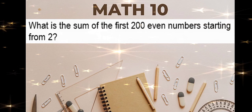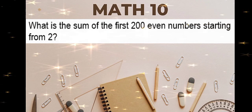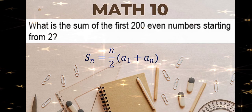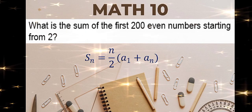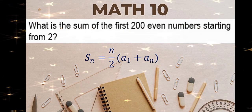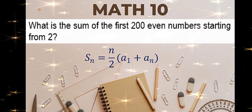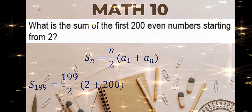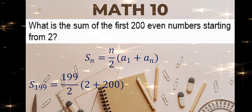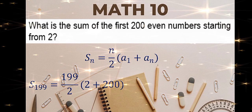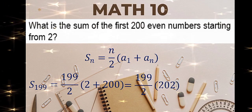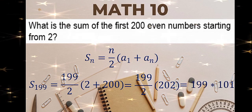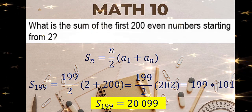What is the sum of the first 200 even numbers starting from 2? First term is 2 and the last term is 200, but our n is 199 because we are starting from 2 ending at 200, making 199 terms in total. Simplify: 200 plus 2 is 202, multiplied by half of 199. That is 20,099.